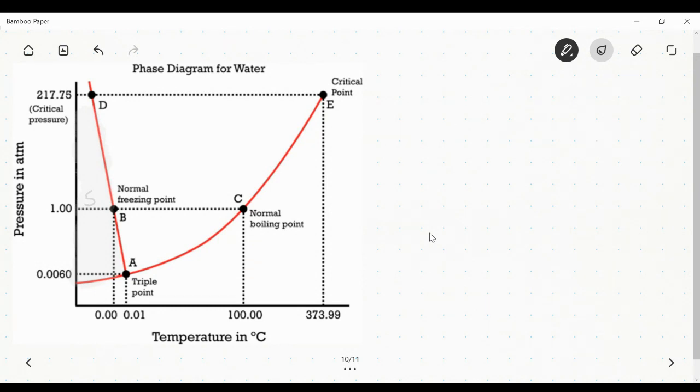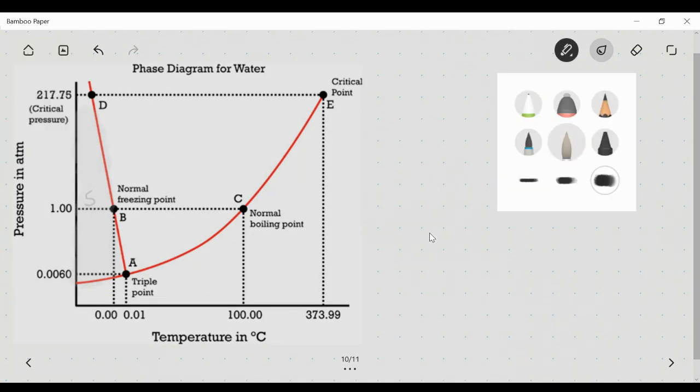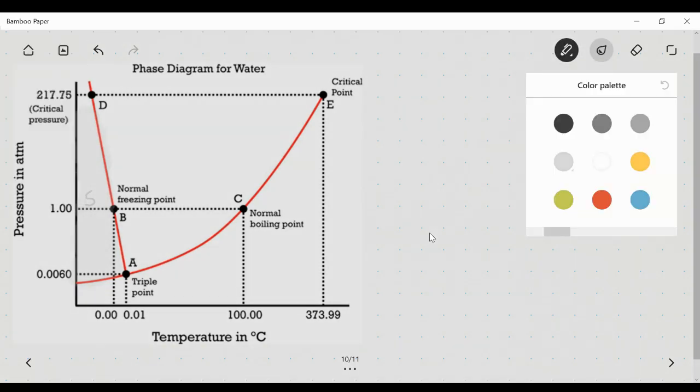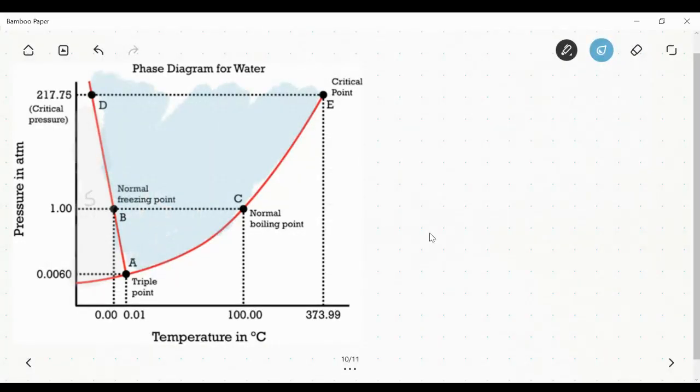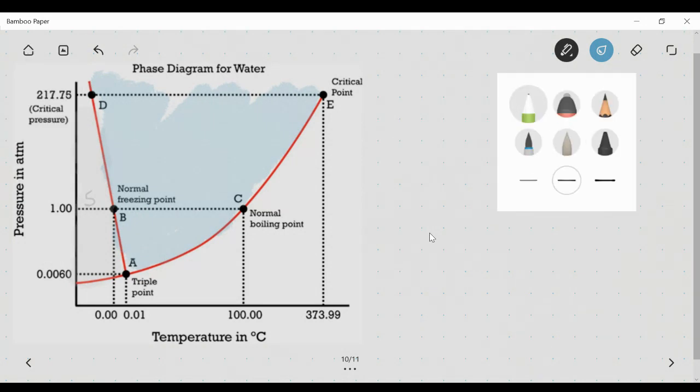But if I go to intermediate temperatures, temperatures a little bit higher, what you tend to find is areas where water is more likely to exist as a liquid. So this middle section of our graph or diagram is going to be water in the liquid phase.